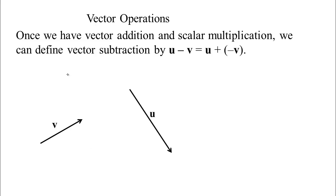Once you have vector addition and scalar multiplication, you can define vector subtraction. For two vectors u minus v, we can define it as taking vector u and adding the opposite of v — subtraction as adding the opposite. So if we have vector v and vector u and want u minus v, we take v, flip it to get minus v (same magnitude, same line, but opposite direction), and then add it to u head to tail.